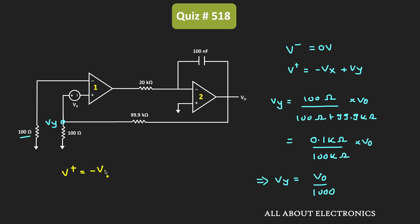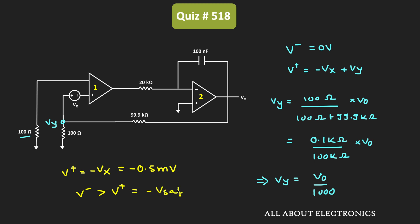At that time, V+ is equal to minus Vx, or minus 0.5 millivolt. That means whenever the circuit is just turned on, V- is greater than V+, and therefore the output of the first op-amp will be equal to minus Vsat.